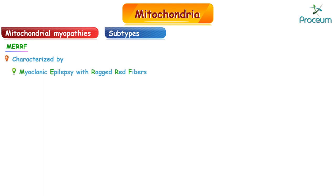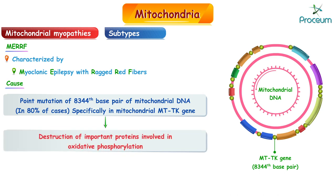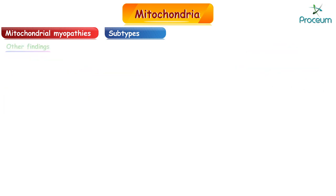MERRF is characterized by myoclonic epilepsy with ragged red fibers. The cause is a point mutation at the 8,344th base pair of mitochondrial DNA in approximately 80% of cases, specifically in the mitochondrial MT-TK gene. This leads to the destruction of important proteins involved in oxidative phosphorylation.